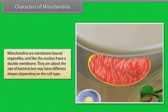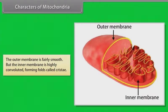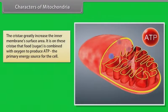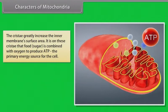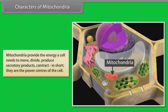Characters of mitochondria: Mitochondria are membrane-bound organelles and, like the nucleus, have a double membrane. They are about the size of bacteria but may have different shapes depending on the cell type. The outer membrane is fairly smooth but the inner membrane is highly convoluted, forming folds called cristae. The cristae greatly increase the inner membrane's surface area. It is on these cristae that sugar is combined with oxygen to produce ATP, the primary energy source for the cell. Mitochondria have their own DNA and ribosomes. Mitochondria provide the energy a cell needs to move, divide, produce secretory products, and contract — in short, they are the power centers of the cell.